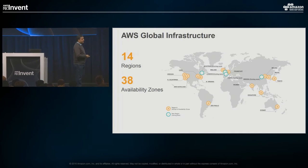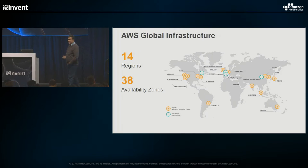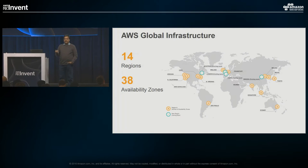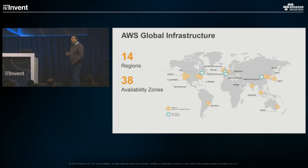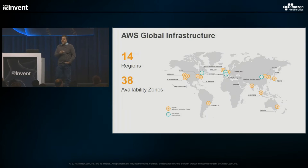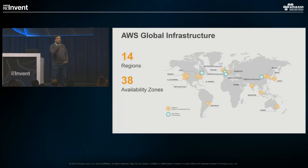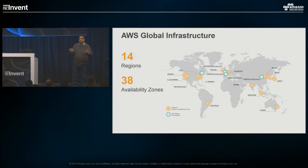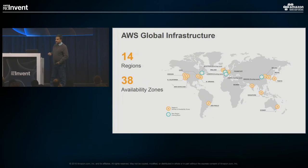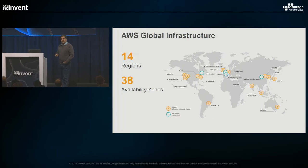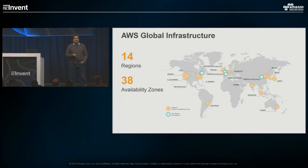AWS operates a global infrastructure with 14 global regions and 38 availability zones. When you get an AWS account, you automatically have access to create your VPC in any of those regions, except for the China region. Customers often ask which region to use — the answer is the region required by your applications. If there are data residency requirements or latency requirements, that should be your home region, which you set as your default region when you create an account.